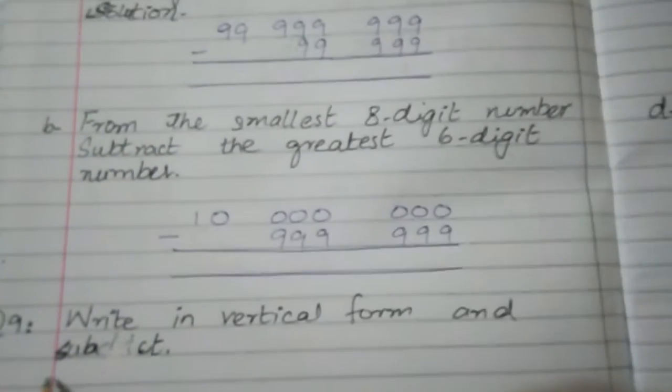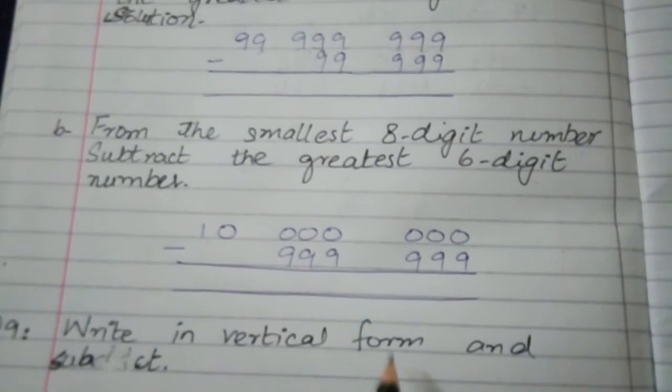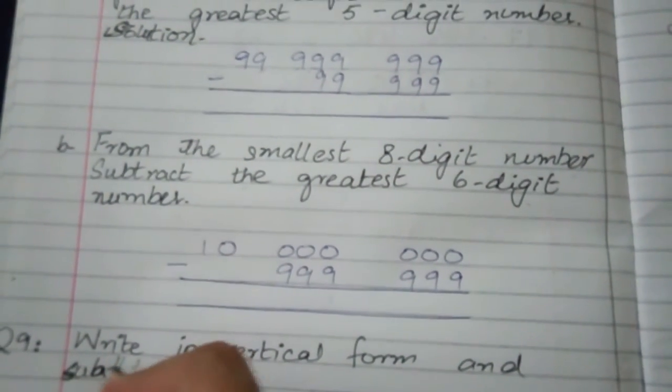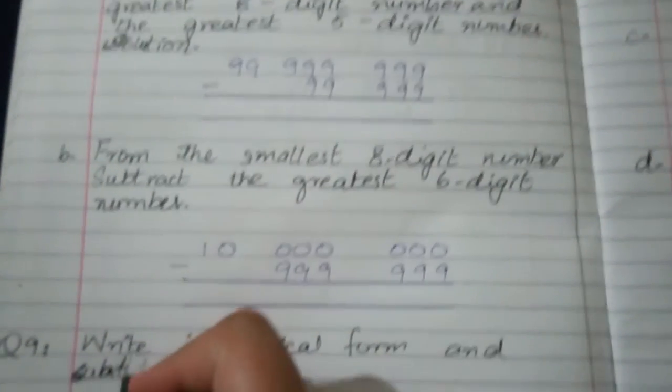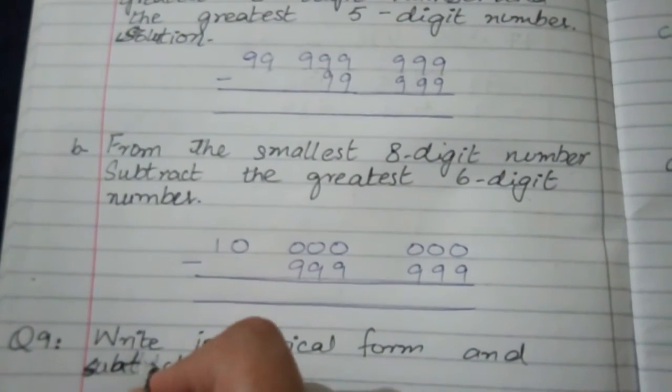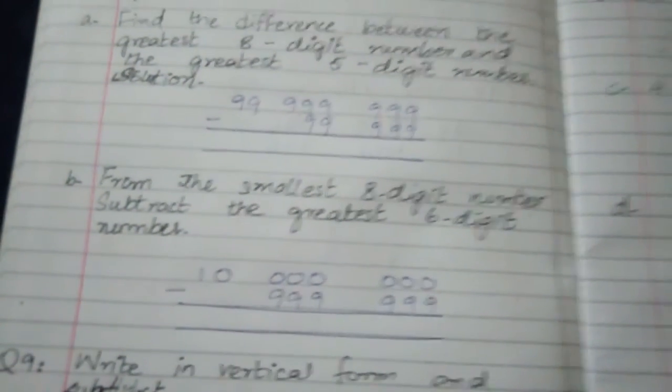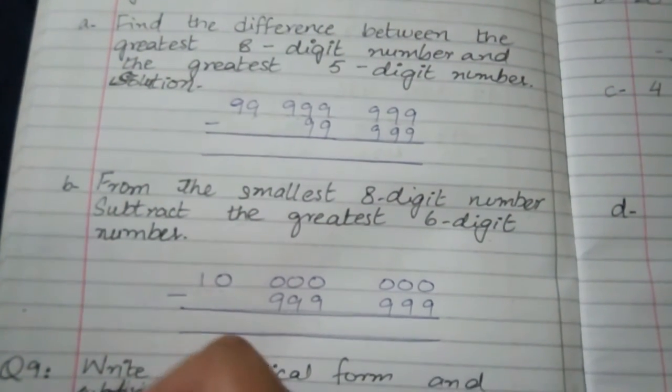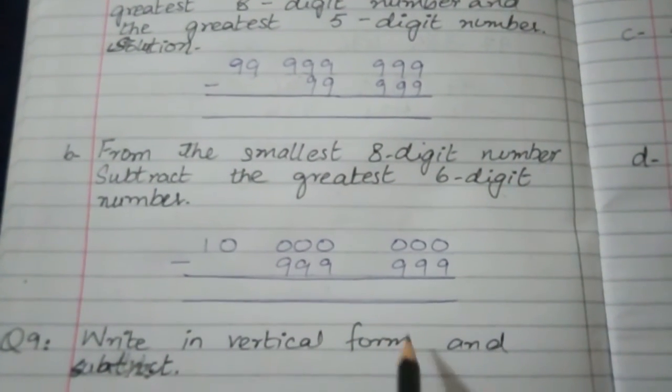Question number 9: Write in vertical form and subtract. What you have to do? You have to do subtraction here.